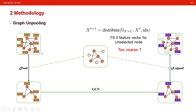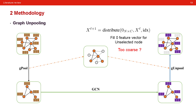The other technique is graph unpooling. Compared with graph pooling, graph unpooling is a little coarse, because they simply assign zero feature vectors to the unselected nodes. The unselected nodes from the graph pooling procedure are filled with zero feature vectors, and they use this to restore the resolution of the pooled graph.